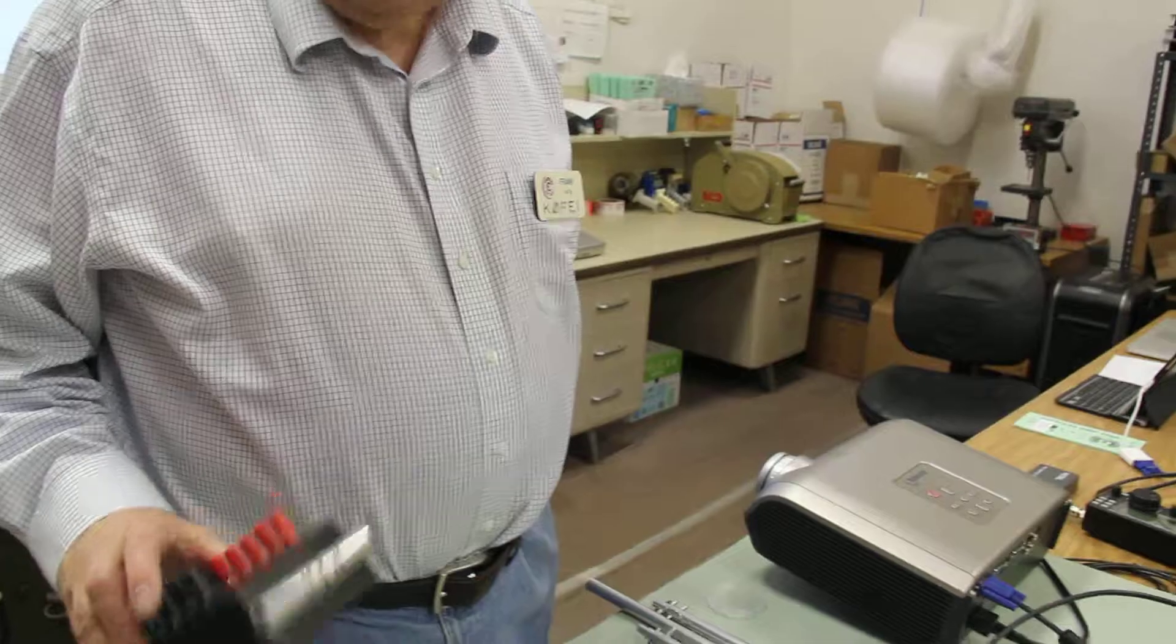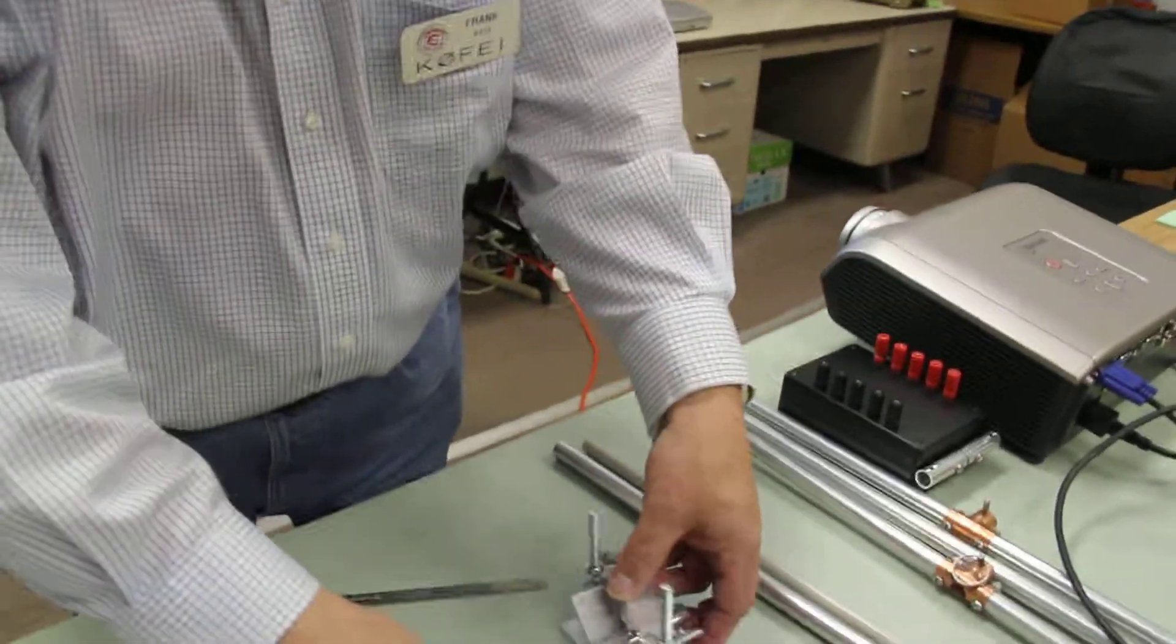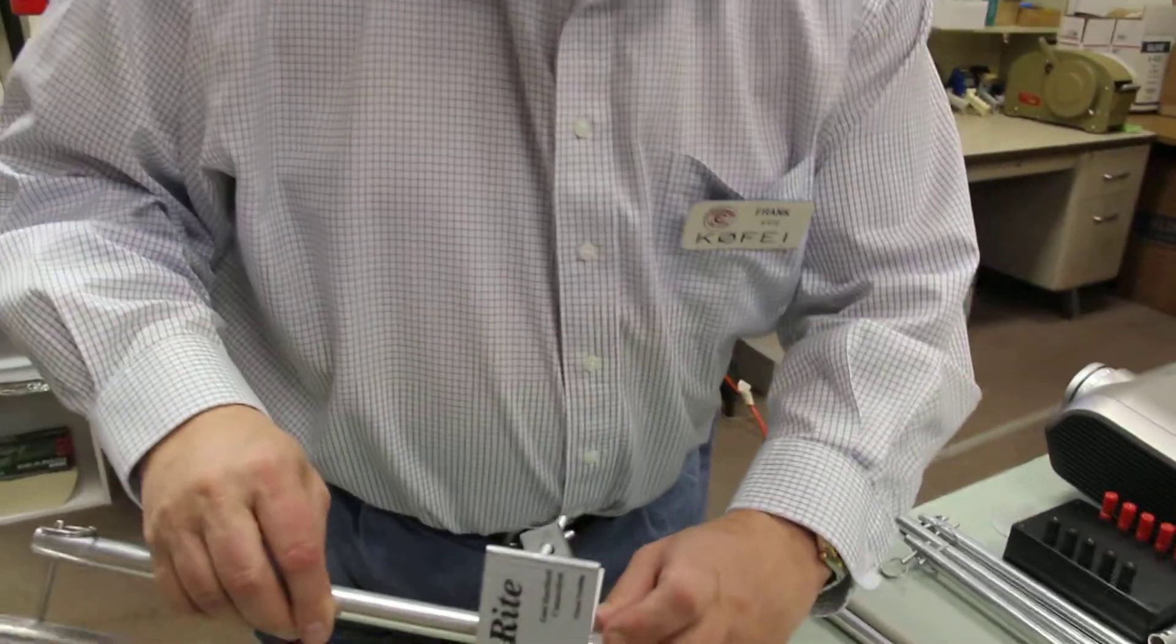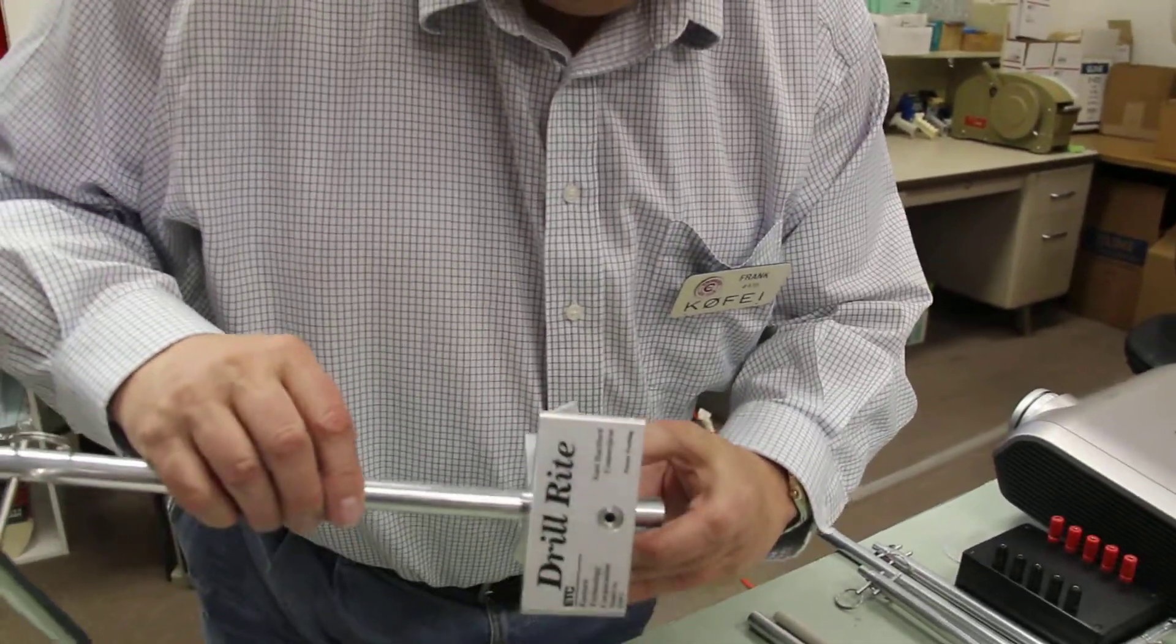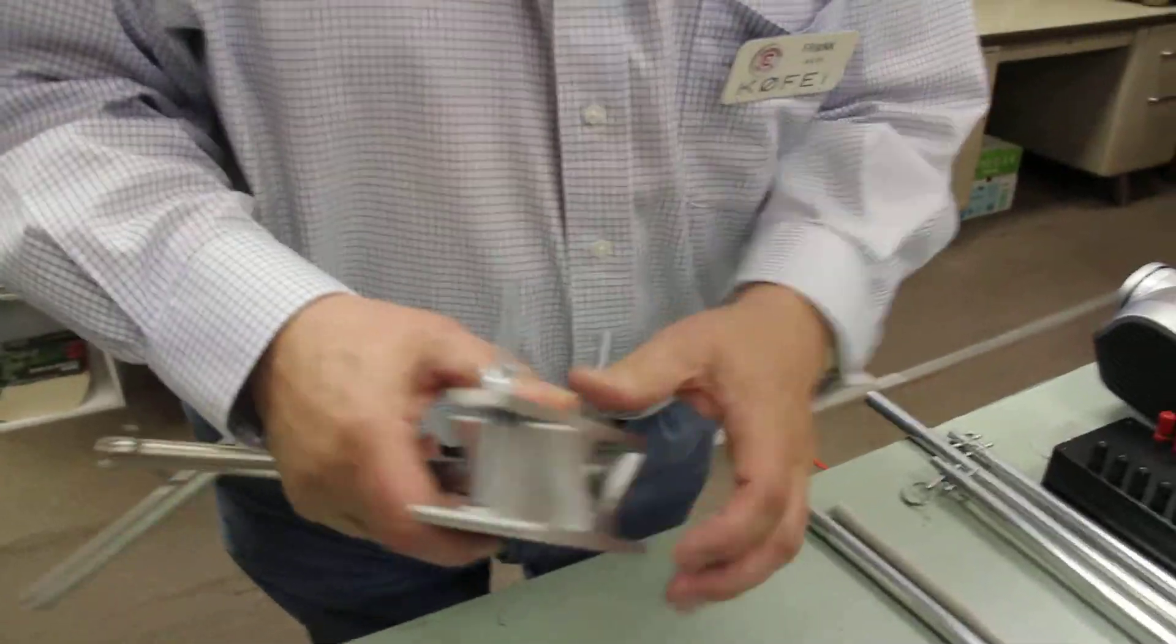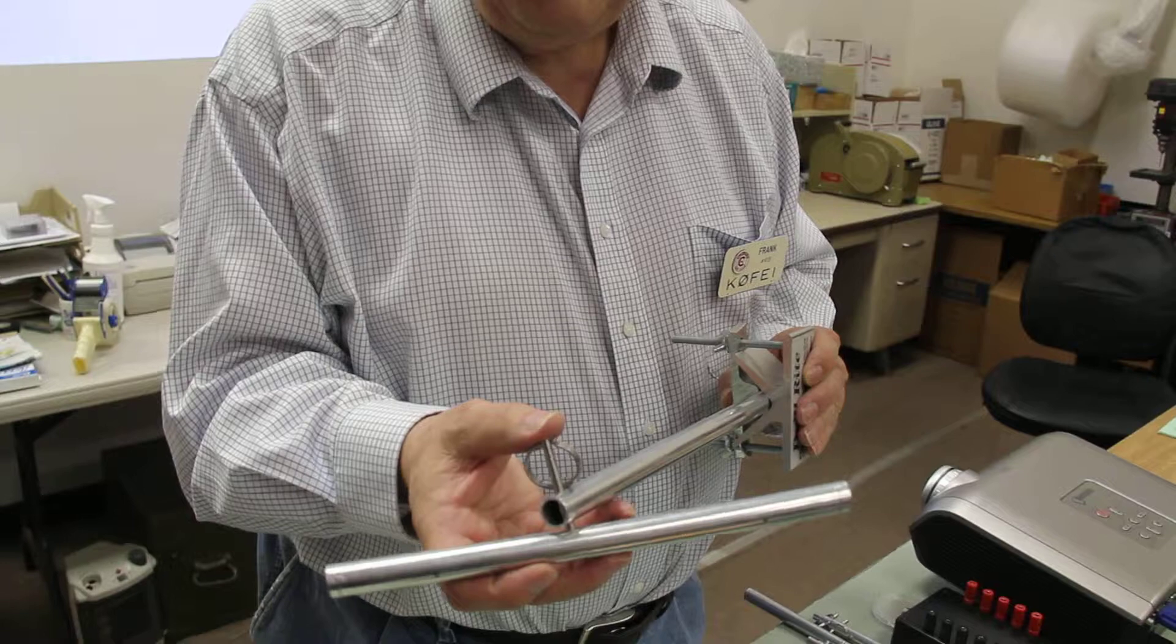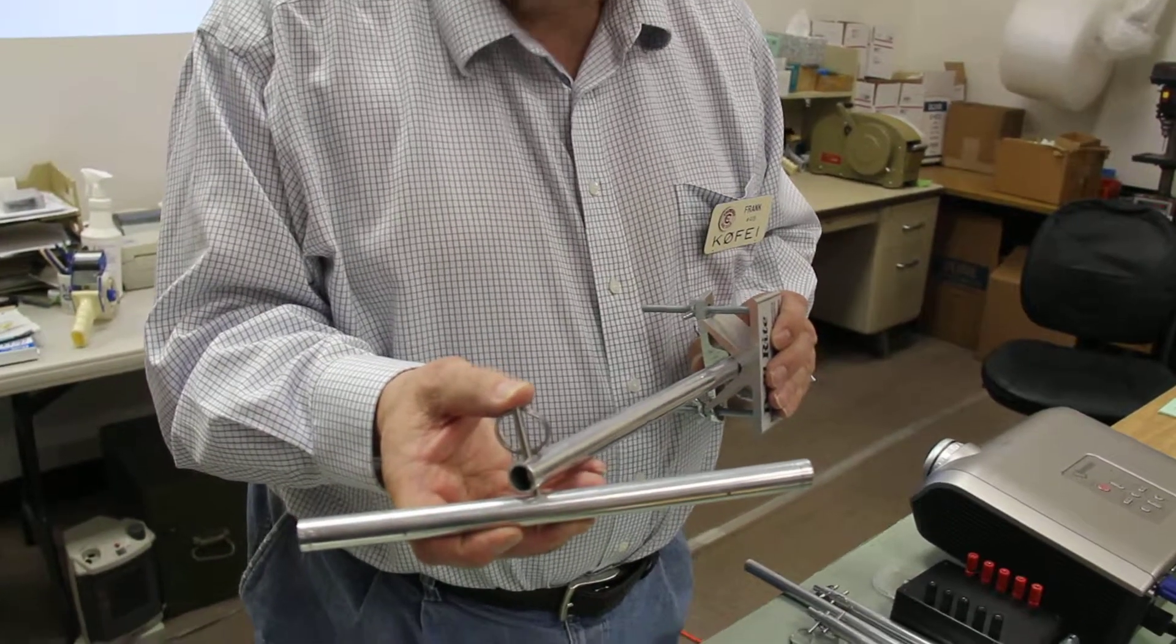And can you show us the jig one more time? And the idea being, you clamp it in place, and then just drill it, and you end up with a hole that goes right through the center. So just a perfect hole through any tubing. Pretty good.